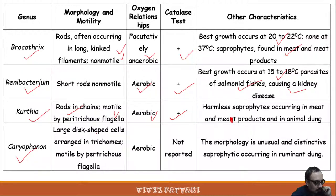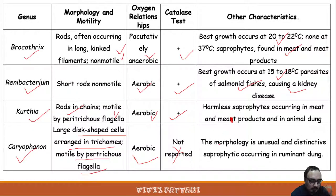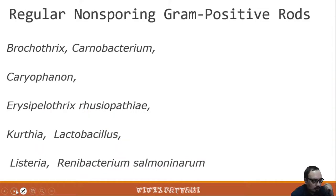Caryophanon has large disc-shaped cells arranged in trichomes and is motile by means of peritrichous flagella. Oxygen relationship: aerobic. Catalase test is not reported for Caryophanon. It is saprophytic, occurring in the ruminant gut.